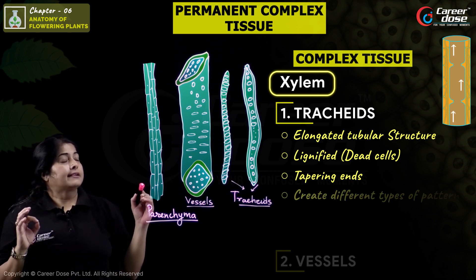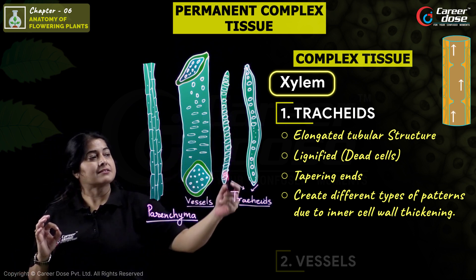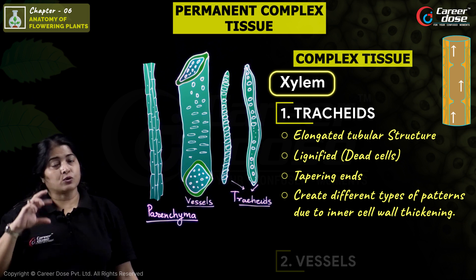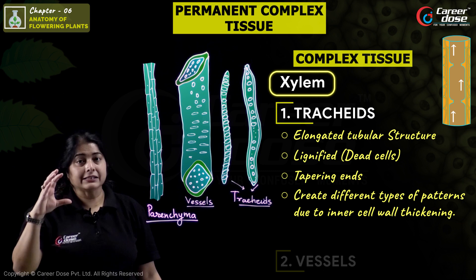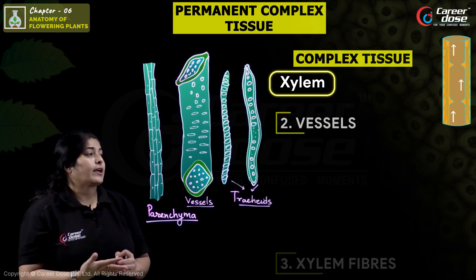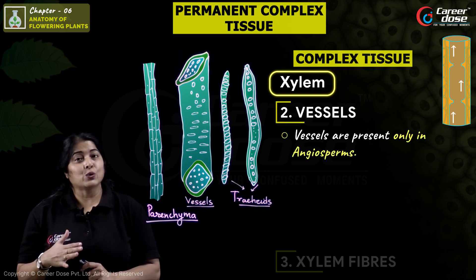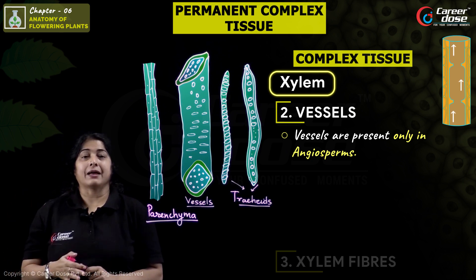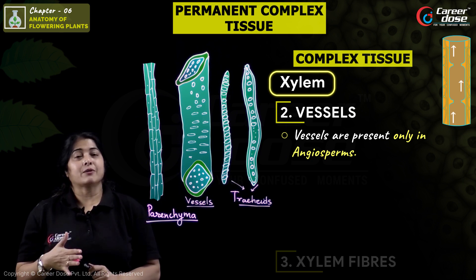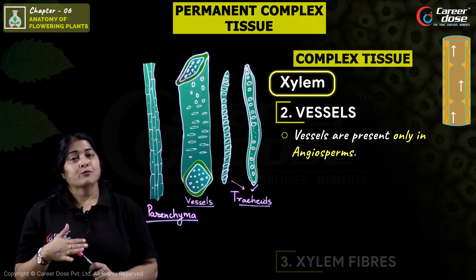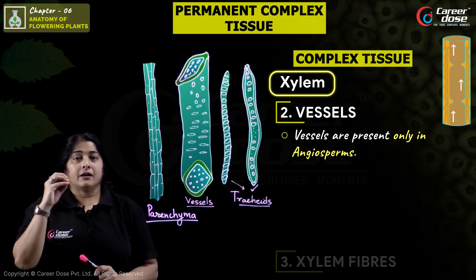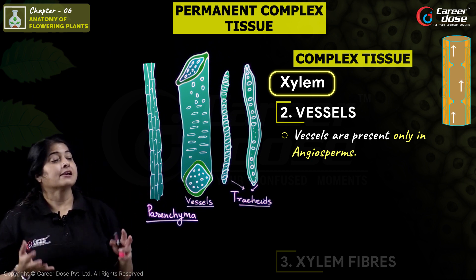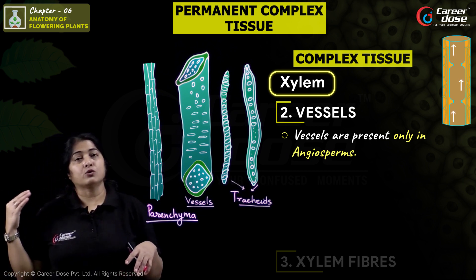The second component is Vessels. An important point: Vessels are structures present in angiosperms but absent in gymnosperms. Gymnosperms as a group lack vessels. Angiosperms are therefore special in having vessels. Vessels are broad, tube-like structures that are also dead cells with no protoplasm.